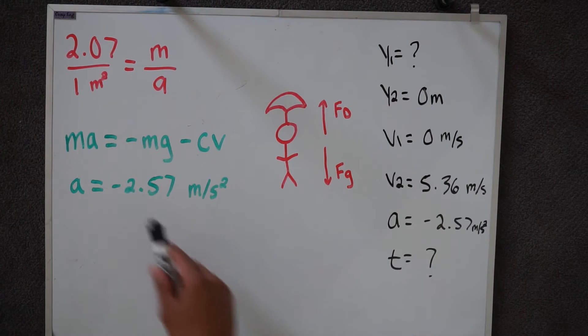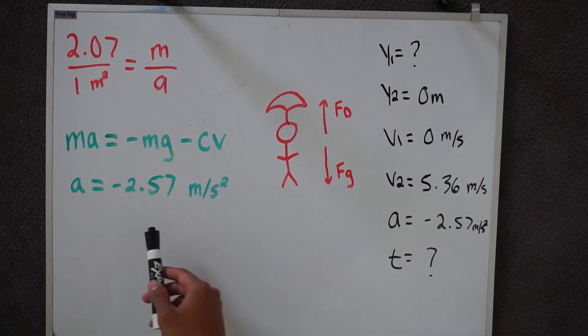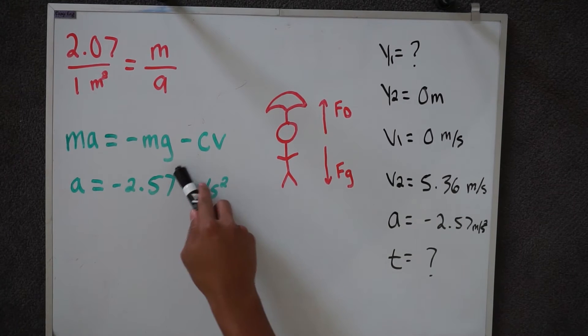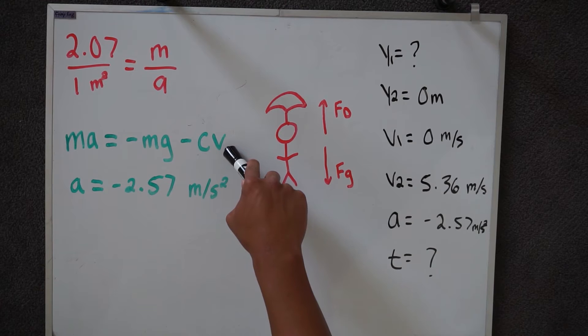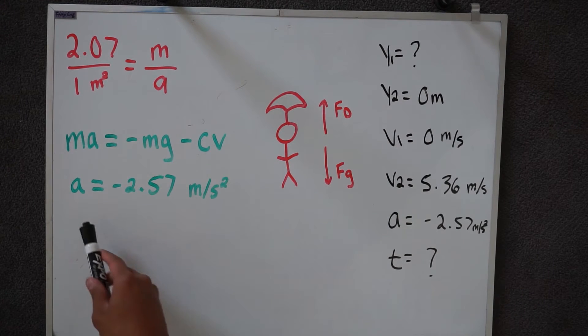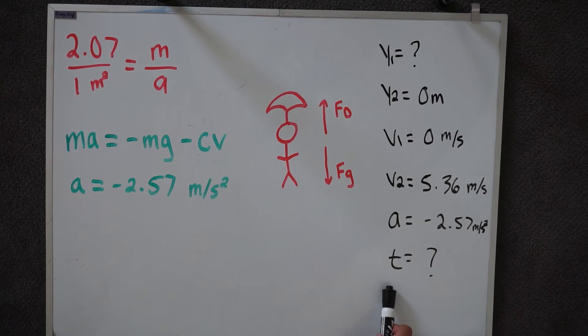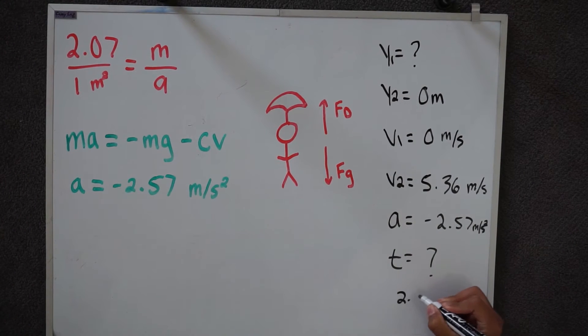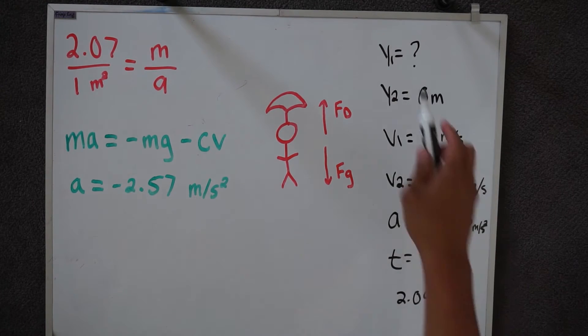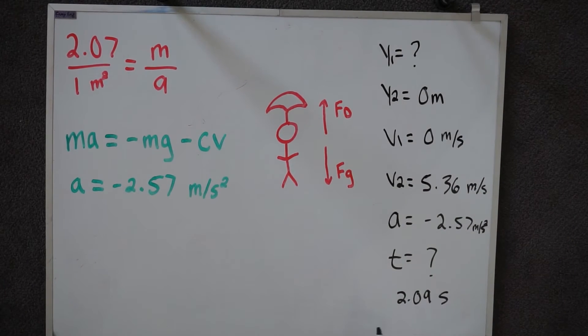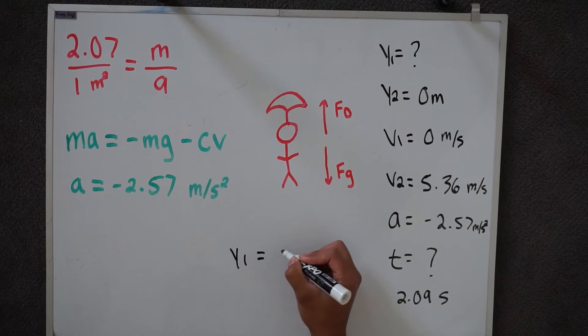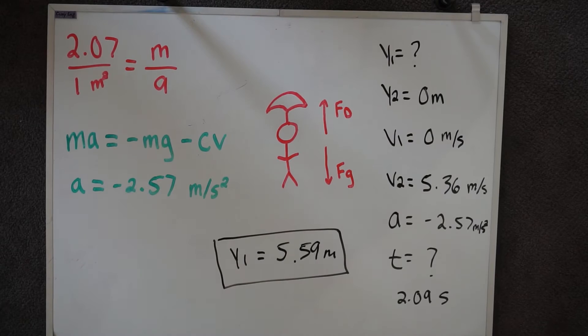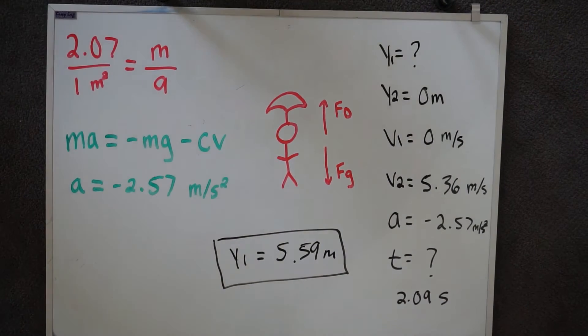Okay, so using this equation right here we can find the acceleration to be negative 2.57 meters per second squared. This is your mass, this is your acceleration, your gravity, drag coefficient, and velocity. So this velocity is terminal velocity specifically. And so using that we plug in what we know for our kinematics and using one of the kinematics equations with these known variables we can find time to be 2.09 seconds. Now with this time we can find our required height to reach our terminal velocity which is 5.59 meters. This height right here is the required height for the object to reach the terminal velocity we wanted which is 5.36 meters per second.